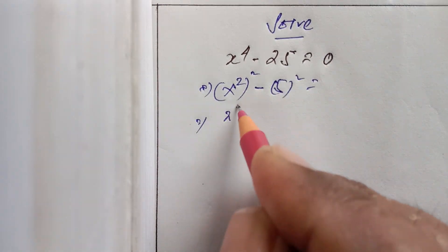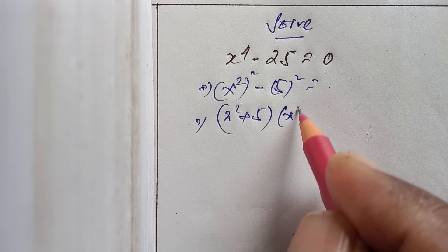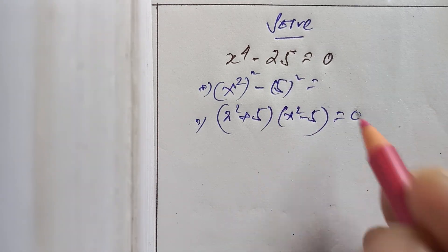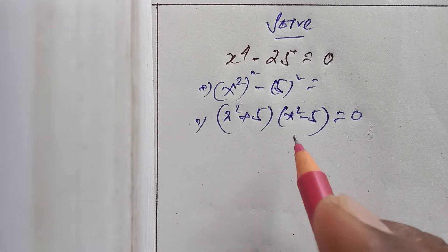Now x squared minus b squared is a plus b multiply a minus b. Product of two factors is 0, one of them must be 0.